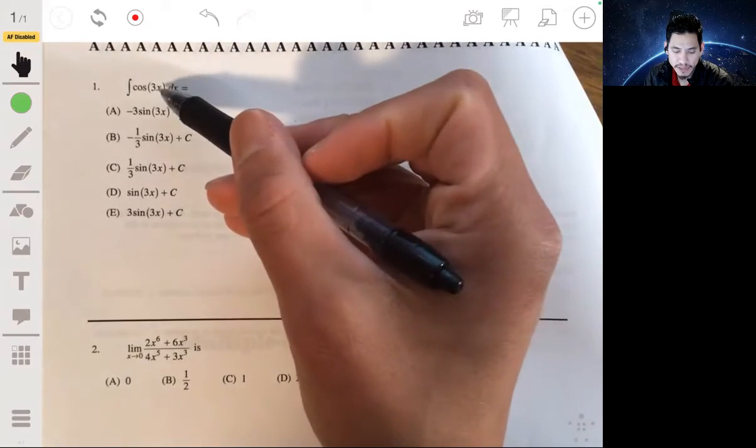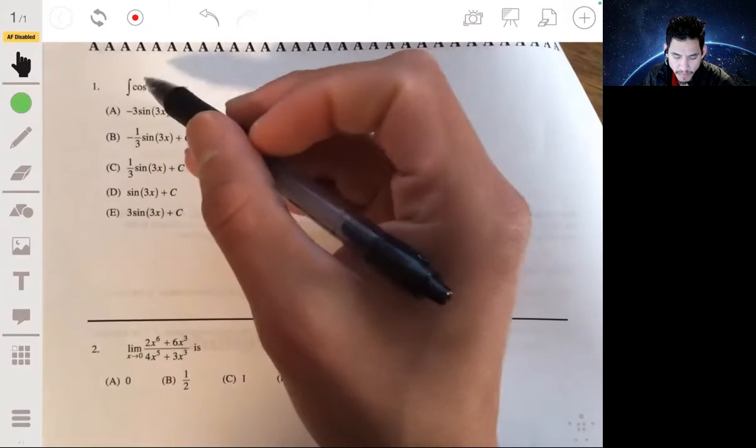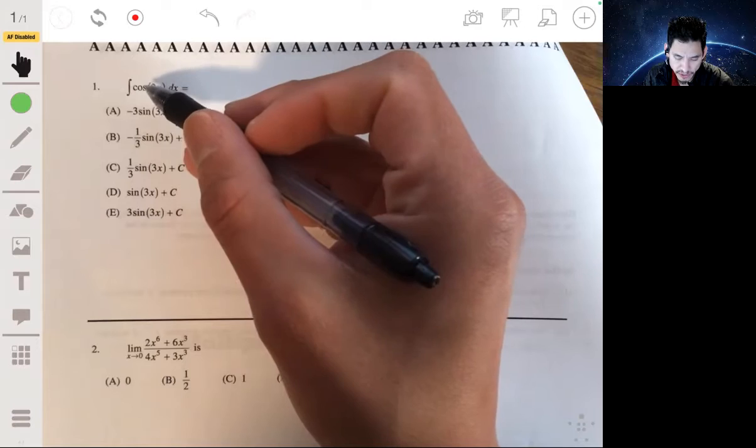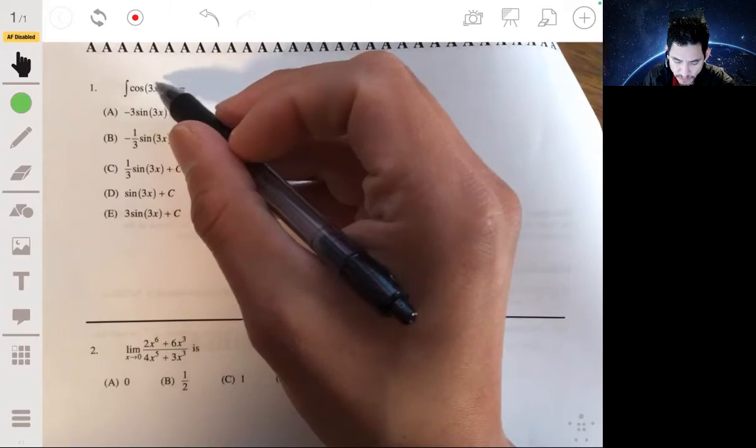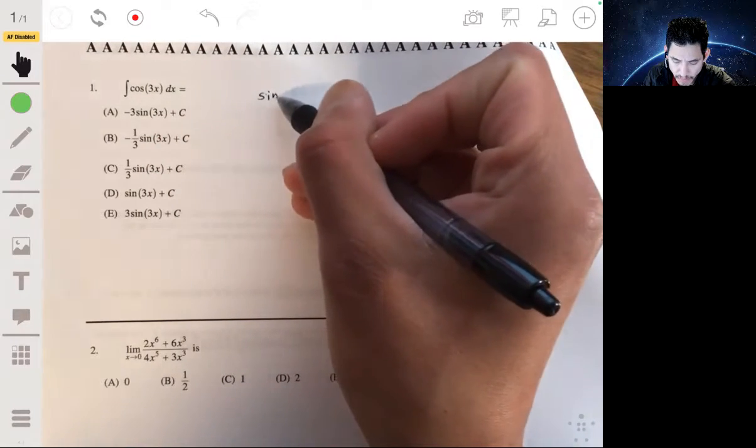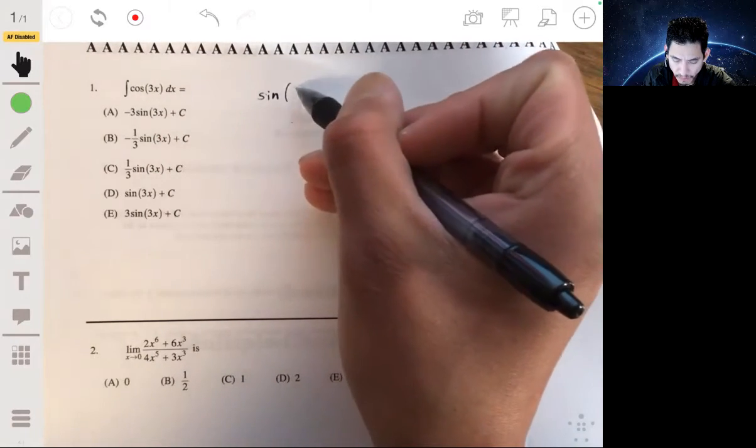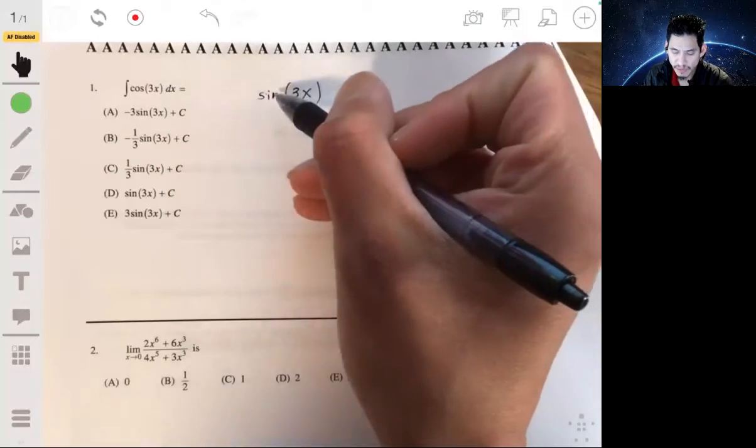To integrate this, we just find the antiderivative of this function. So you want to find the function whose derivative is the cosine of 3x. Since we have the cosine function, the derivative of the sine function is the cosine function. So we have the sine of 3x.